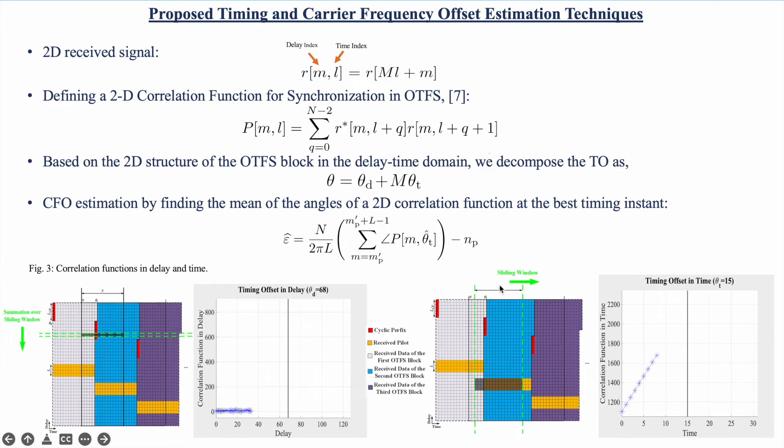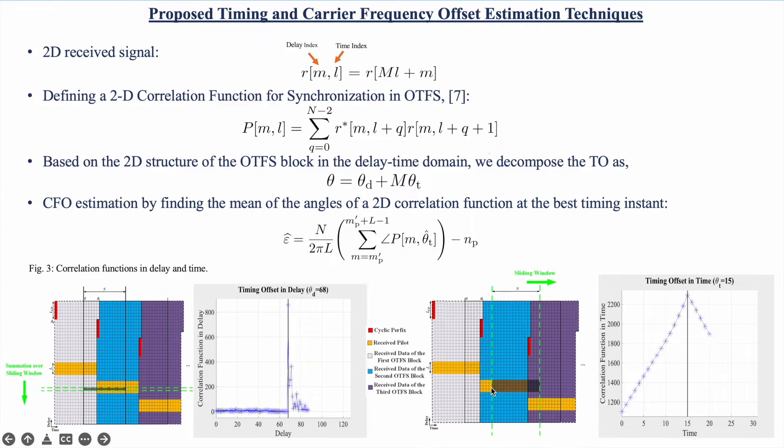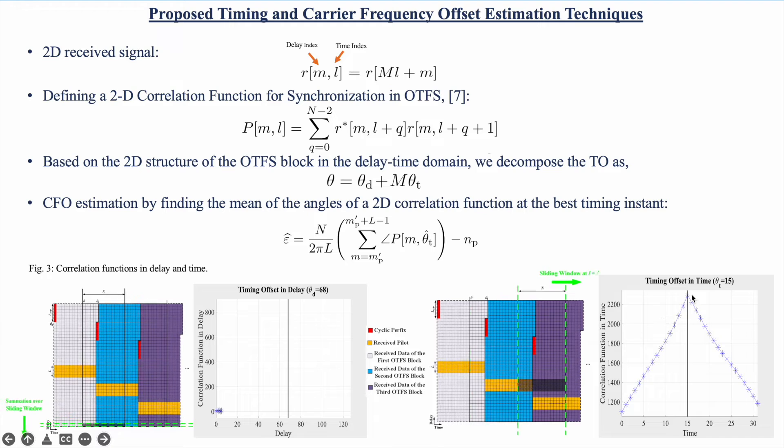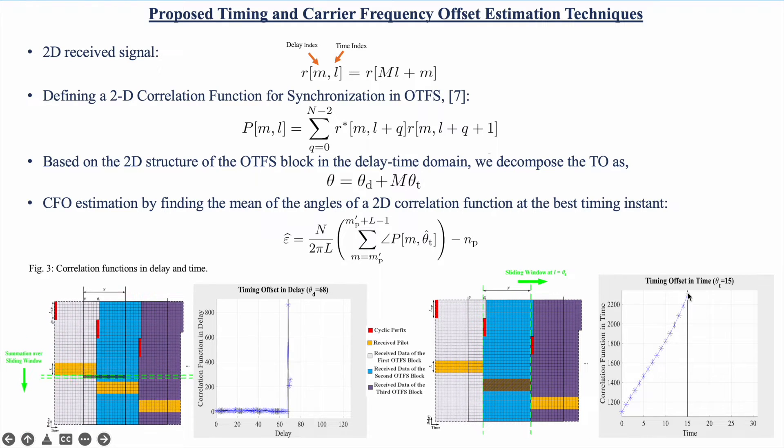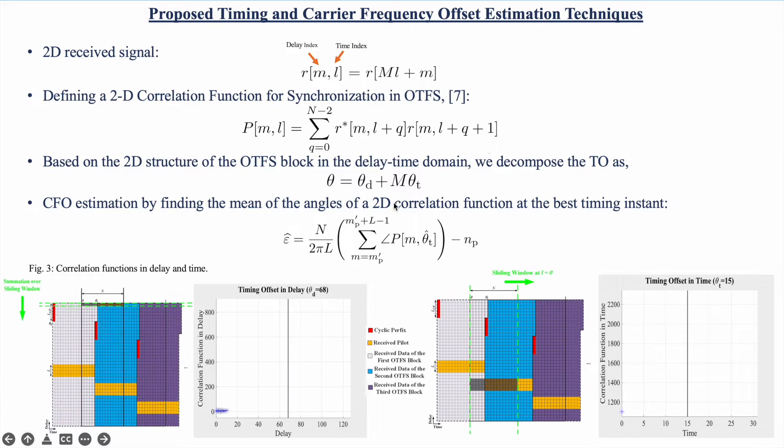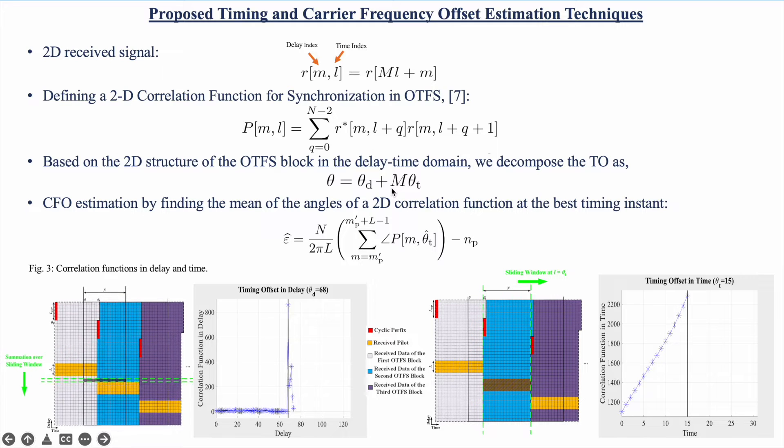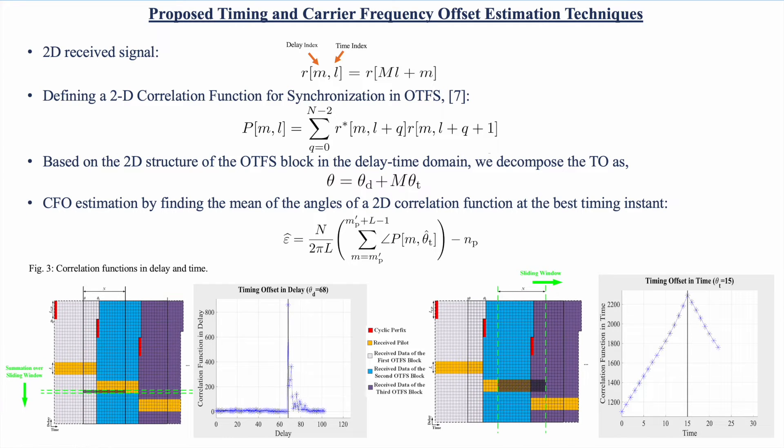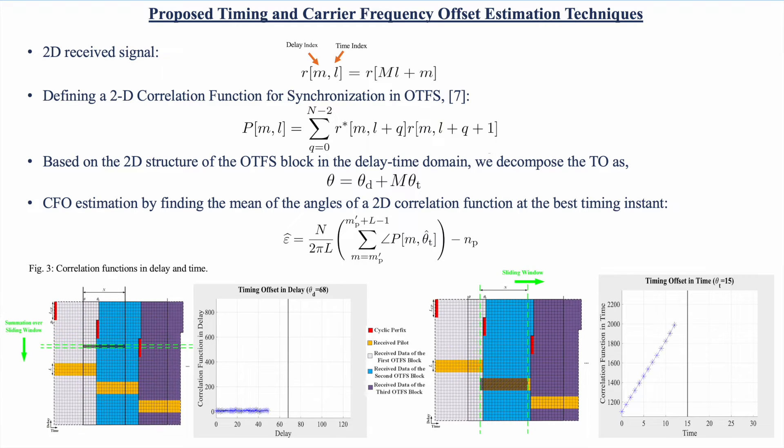In the same manner for timing offset in time, we slide the window in time and take summation over different delays, and again where the correlation window is fully aligned with the pilot is the timing offset in time. As we can see, timing offset in time is multiplied by m. It means a single error here can be multiplied by m and misalign the received signal totally. So the accuracy of this estimation is very important.